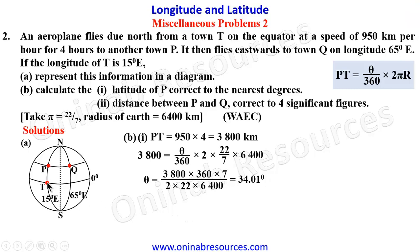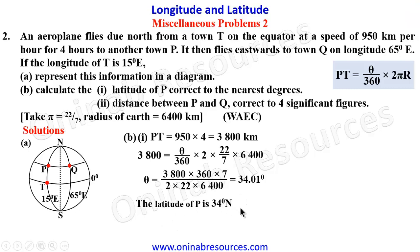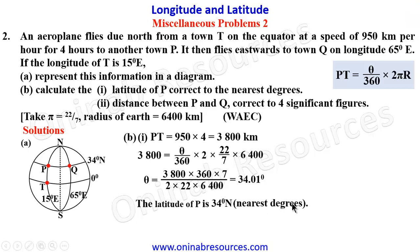The angular difference is 34.01 degrees. Since T is at zero degrees latitude on the equator, the latitude of P is exactly 34.01 degrees North — which to the nearest degree is 34 degrees North.